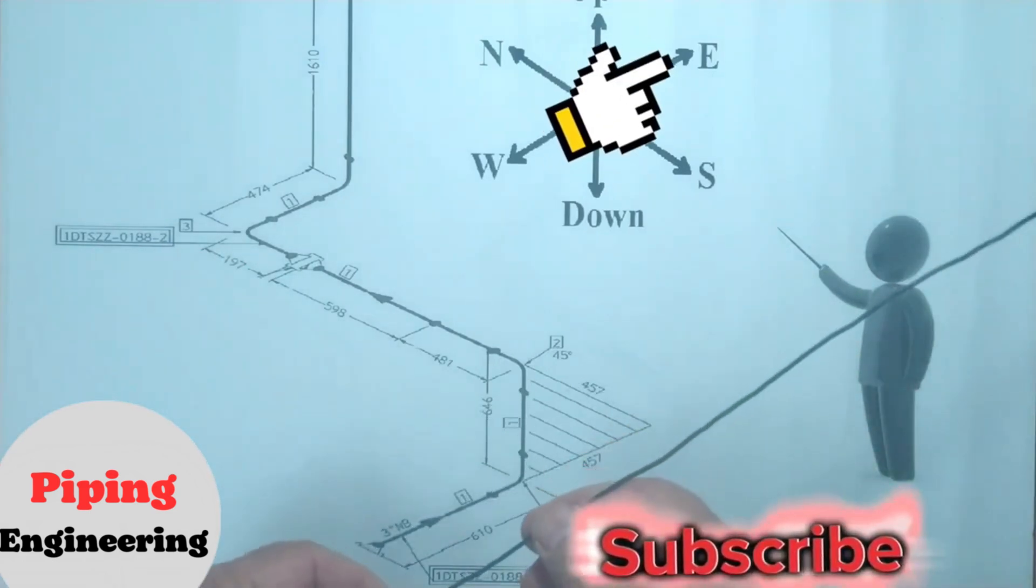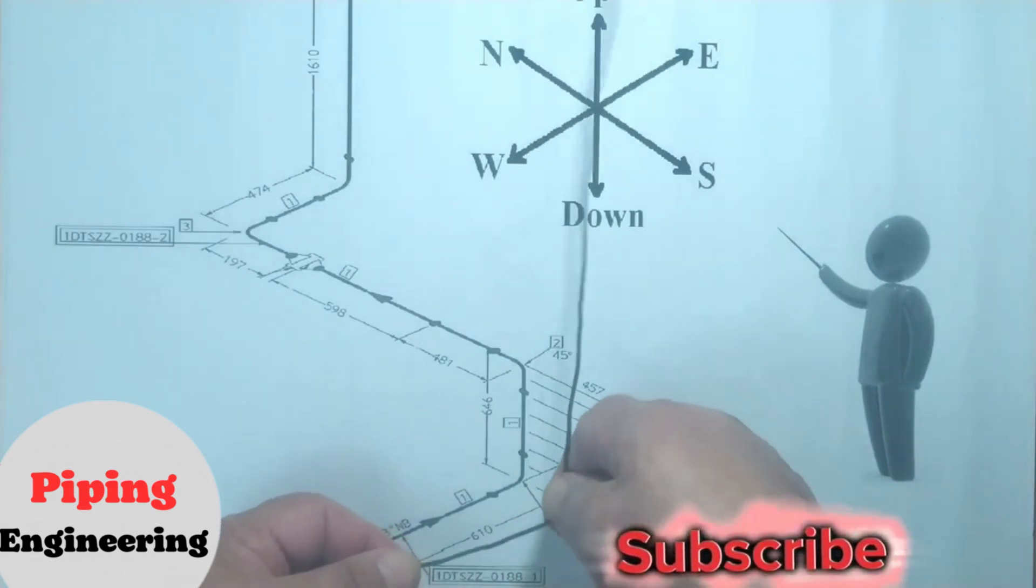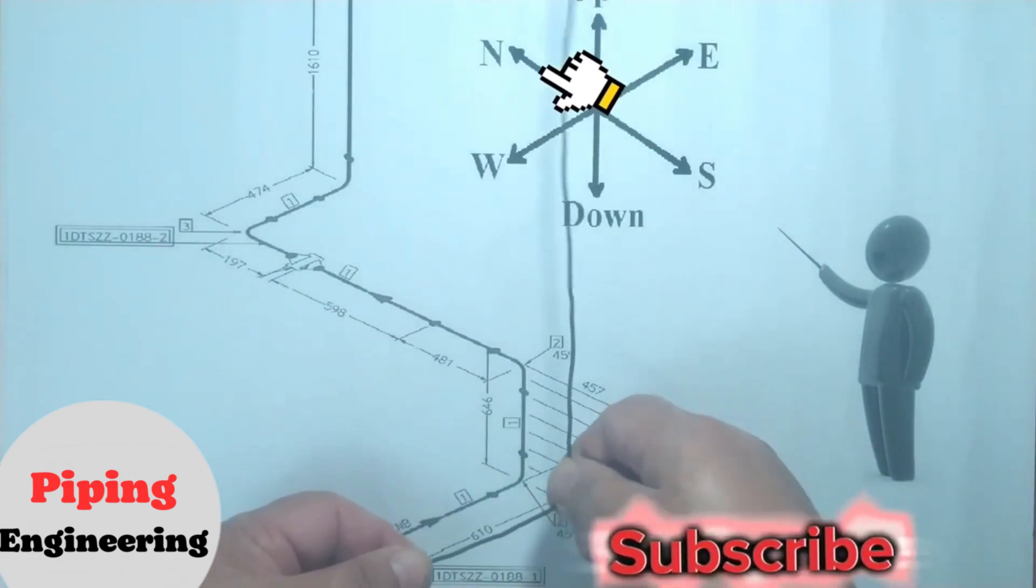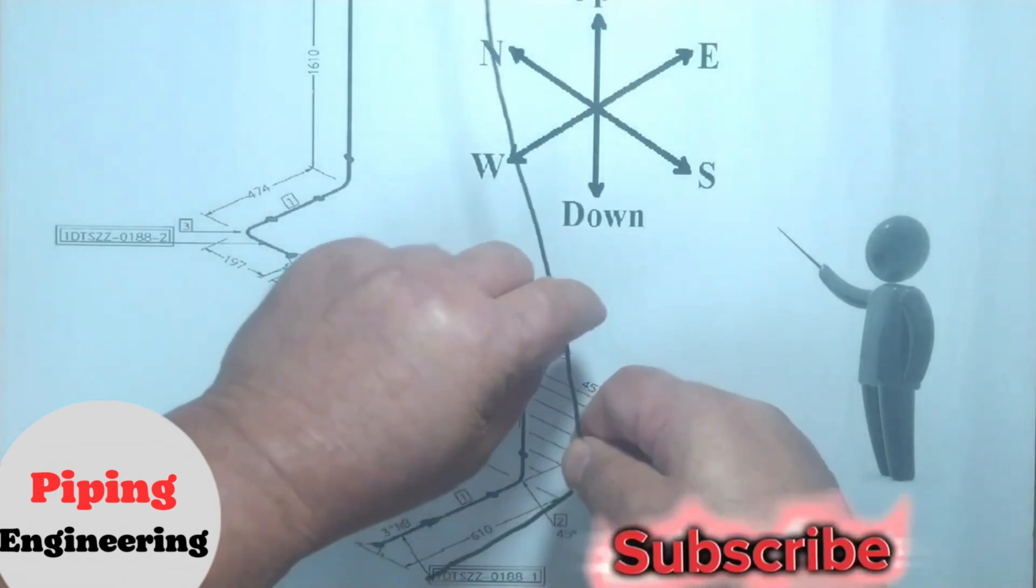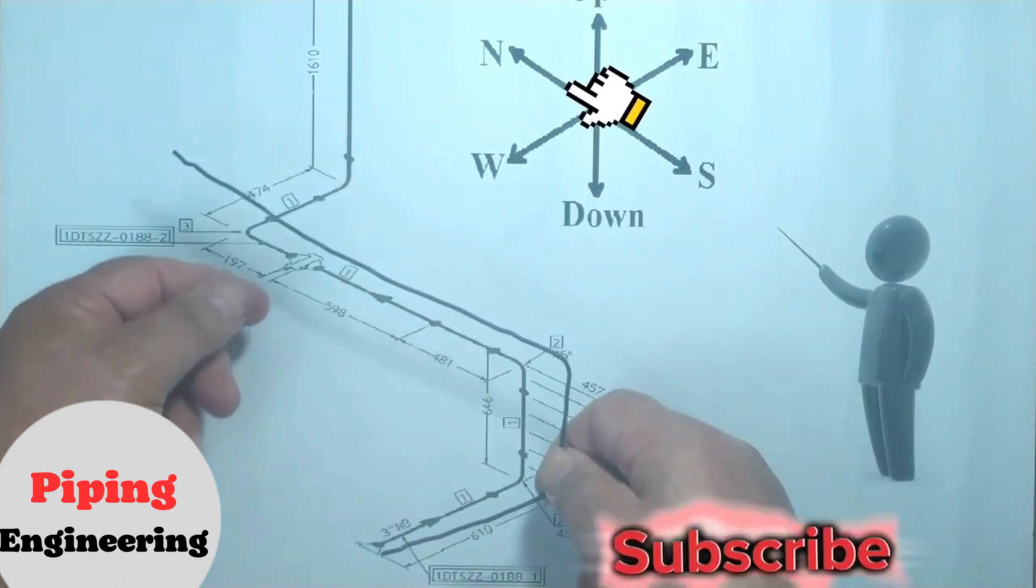Since the pipeline is traveling to the east direction, we hold the wire in the east direction. Then the wire bends first to the east then to the north direction at 45 degrees. Then the wire continues to the north direction.